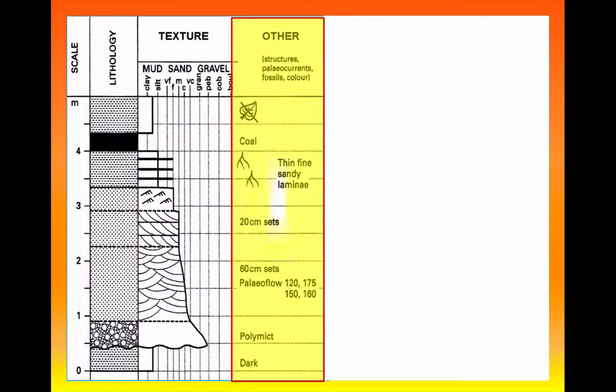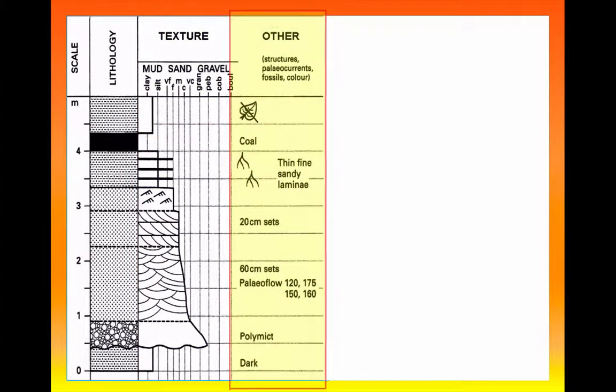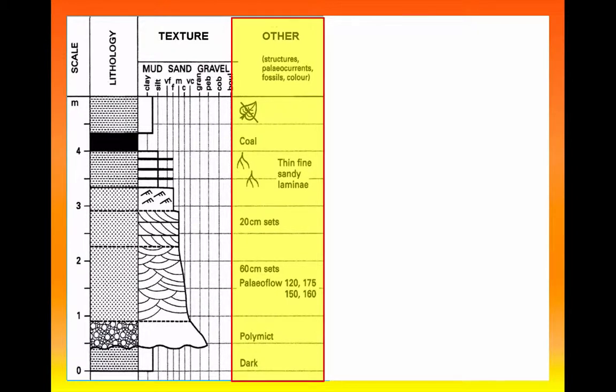The final part of this graphic log gives us an opportunity to represent any other information that we might find. You'll see some descriptive terms here, you'll see some symbols representing fossils that are found, some information about color, and maybe even the direction that the current was flowing in that deposited each of these layers. So you can see there's a tremendous amount of information on these graphic logs about the sequence of sediments, and it's a very efficient way of presenting this information.